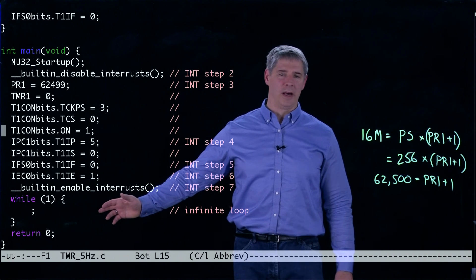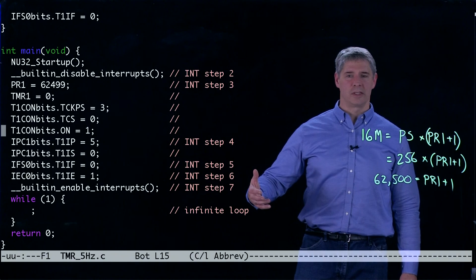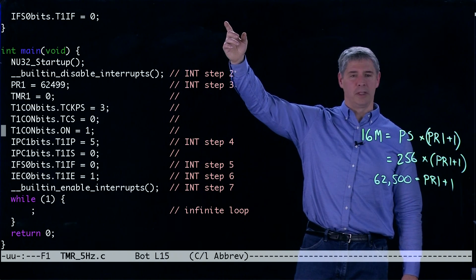And then all we have now is an infinite loop and what's going to happen is we're going to count up to 62,499. The interrupt service routine will be triggered.